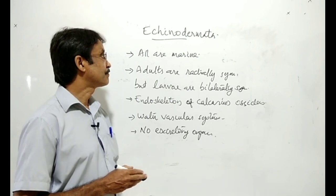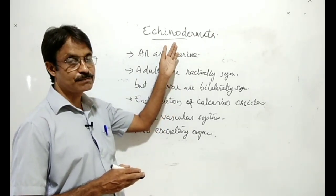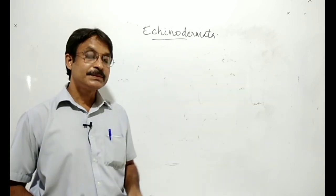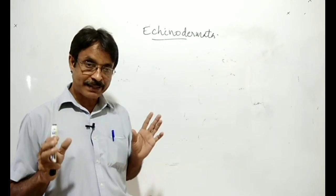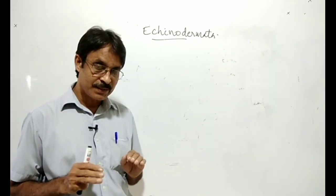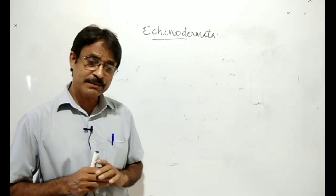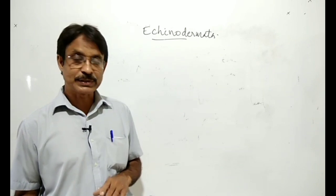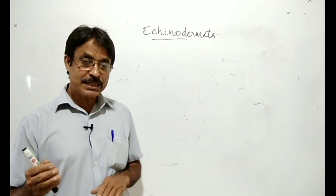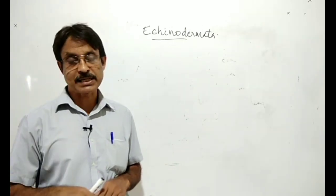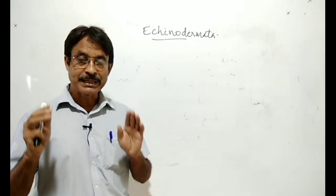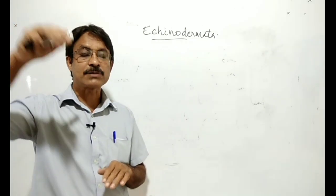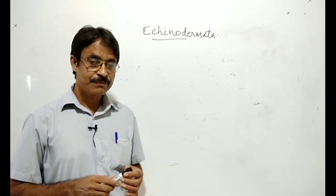So this is the echinoderms. Then they have a digestive system or alimentary canal, and that alimentary canal is complete. Complete alimentary canal means having two openings - what are the two openings? Mouth and anus. Their mouth is in the lower side or ventral side, so they have a ventral mouth. But the anus is present on the upper side or dorsal side, so they have a dorsal anus. So their alimentary canal is complete with a ventral mouth and a dorsal anus.